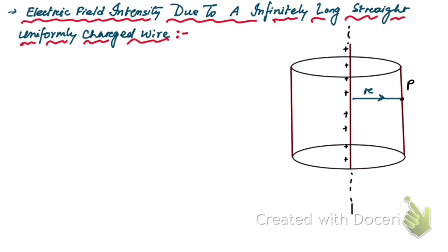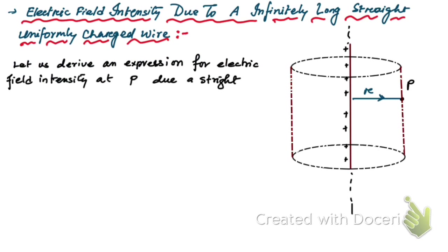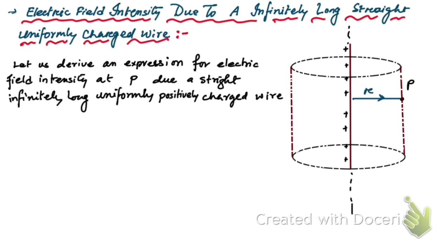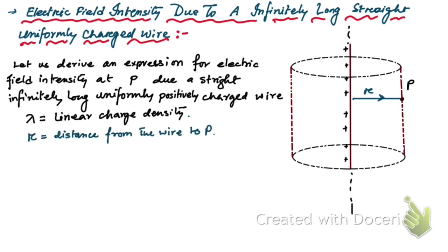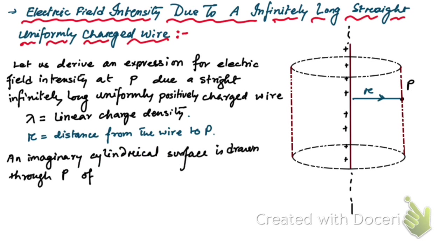Let us derive an expression for electric field intensity at point P due to a straight, infinitely long, uniformly positively charged wire. Let λ (lambda) be the linear charge density, and R be the distance from the wire to the point P. We assume an imaginary cylindrical surface drawn through point P, of radius R and length L, around the wire.